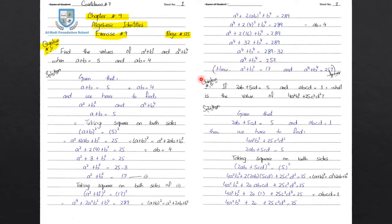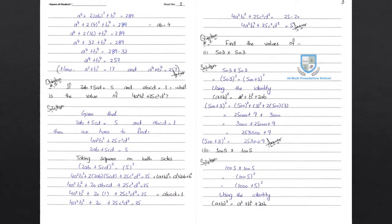So here we have found the values: a square plus b square is equal to 17, and a raised to power 4 plus b raised to power 4 is equal to 257. We have found both values and solved the question.